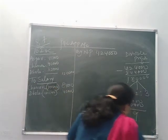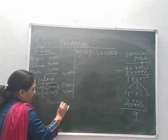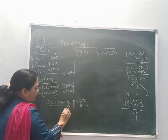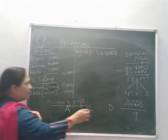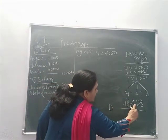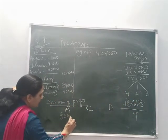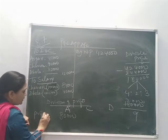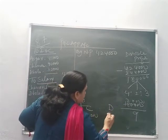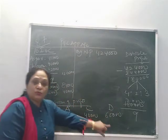Now let me show the division of profits first and then we will continue. Division of profits for Asgar, Chaman and Dholu: 20,000 multiplied by 4 is 80,000 for Asgar; 20,000 multiplied by 2 is 40,000 for Chaman; and 20,000 multiplied by 3 is 60,000 for Dholu. This profit is divided in the ratio 4:2:3.